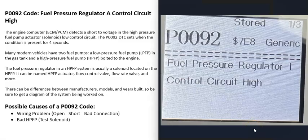Today I'm talking about a P0092 code - what it is and how you could go about fixing it. The P0092 code is a fuel pressure regulator control circuit high, and some scan tools will give you 'fuel pressure regulator one control circuit high.'